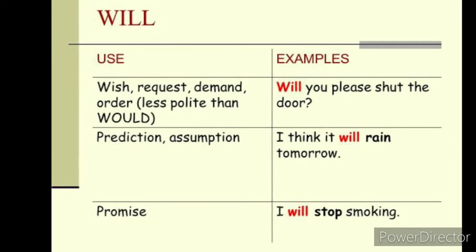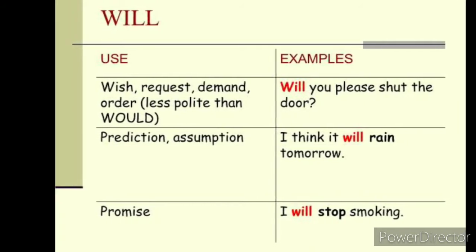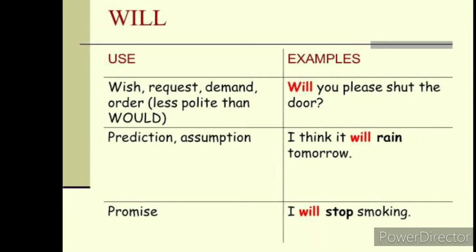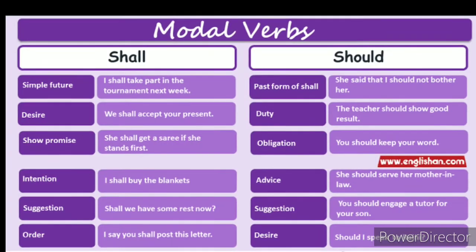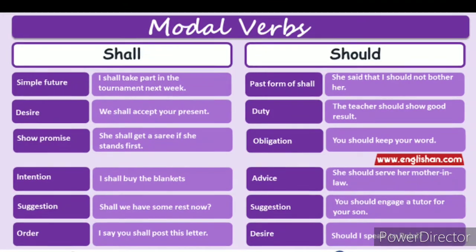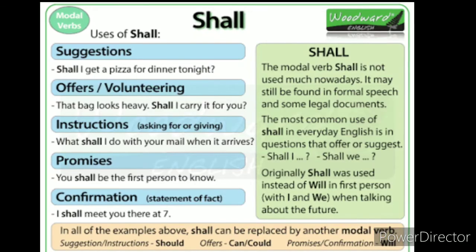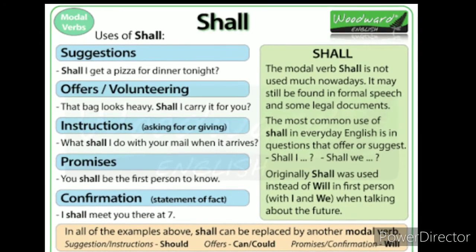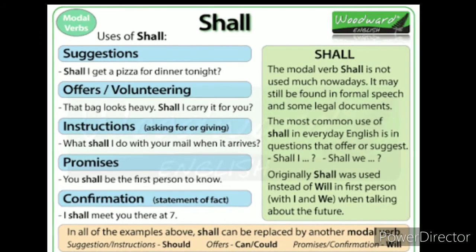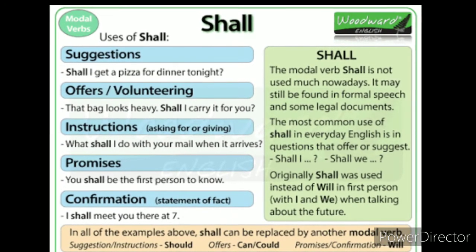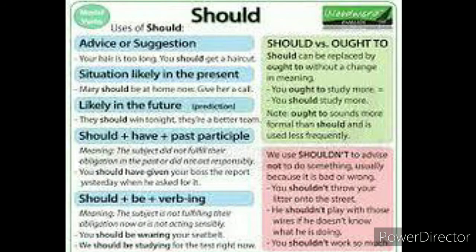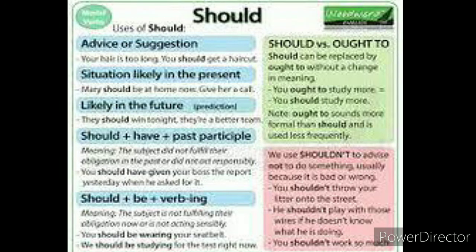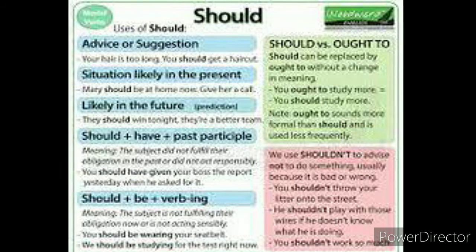I think it will rain tomorrow — so to assume or predict, we will use Will. Next is Shall and Should. Shall we use for permission, offers, instructions, and promises. Should is used to suggest, give advice, and represents not a strong obligation — it represents duty.